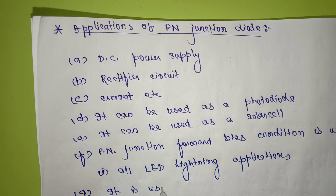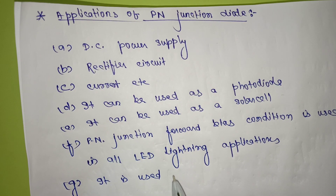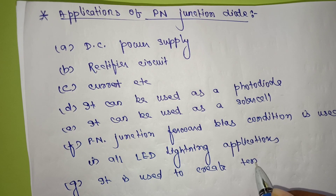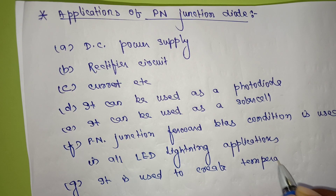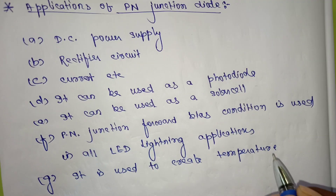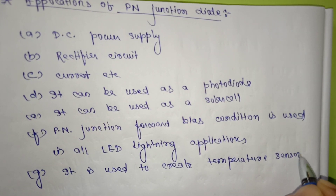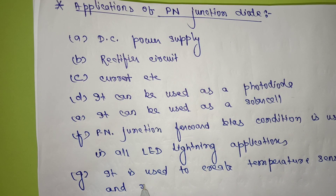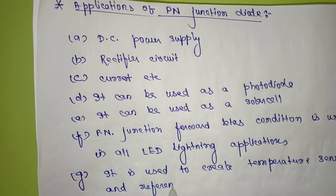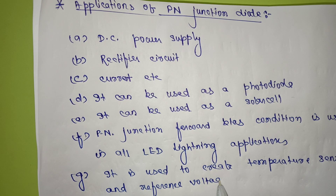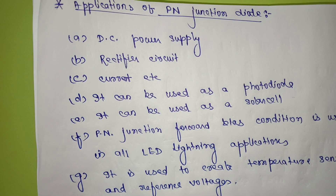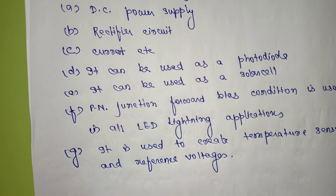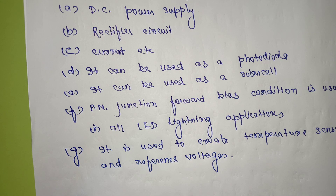It is used to create temperature sensors and reference voltage. So these are all the applications of the PN junction diode. Thank you.